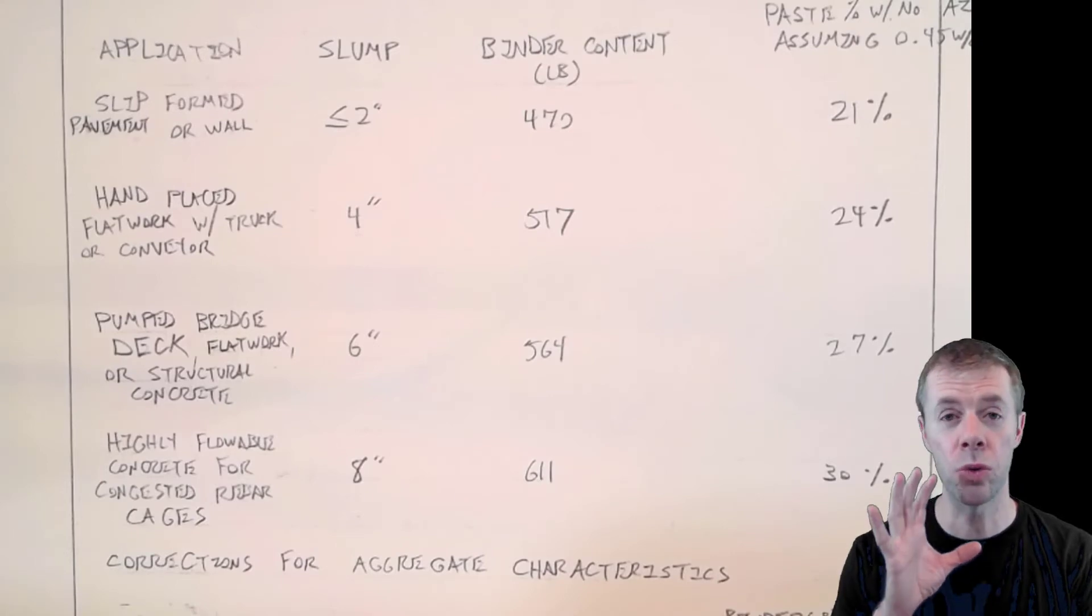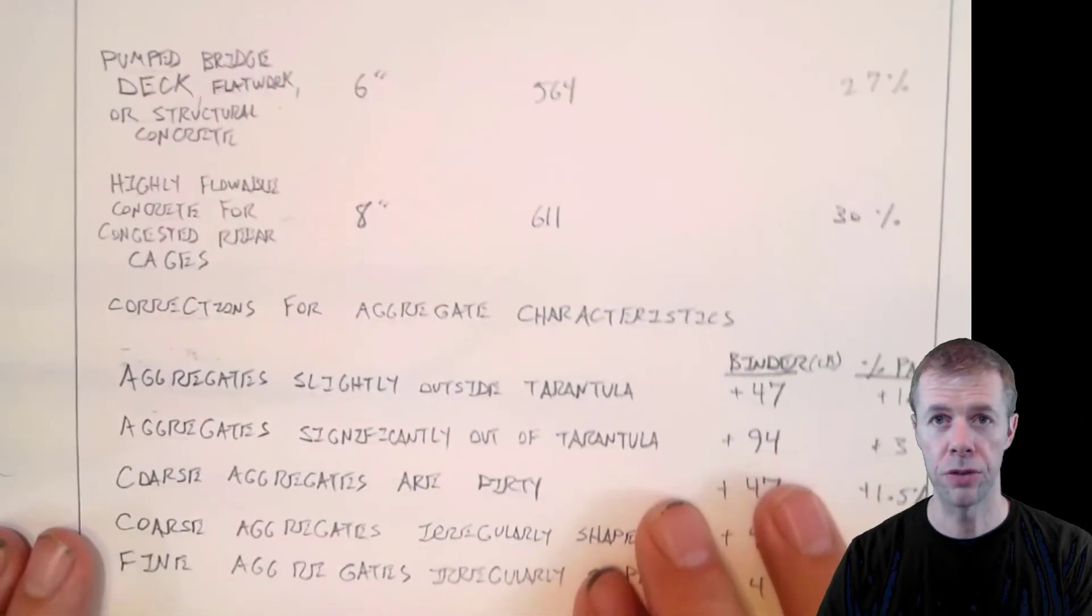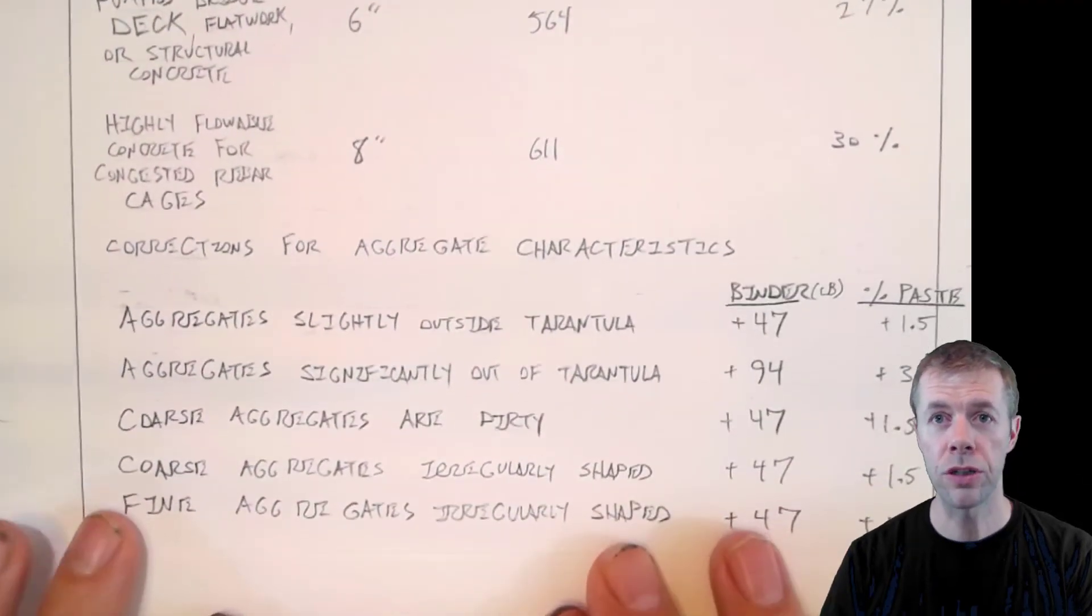Now remember, this is assuming that you had great aggregates, that everything was in the Tarantula Curve, everything was really where it's supposed to be. What happens if it's not? Well, we can make corrections. And to make a correction, all we have to do is add more binder or add more paste.